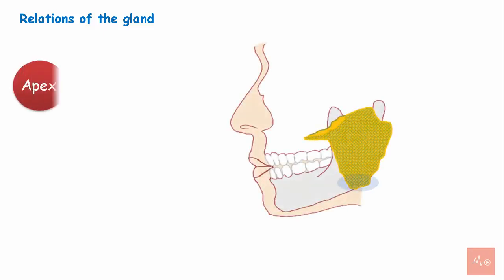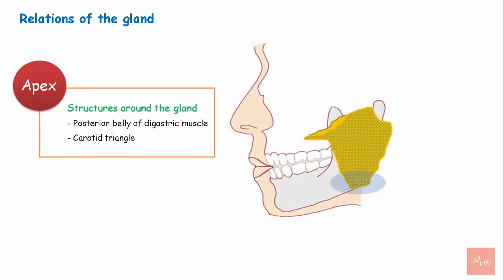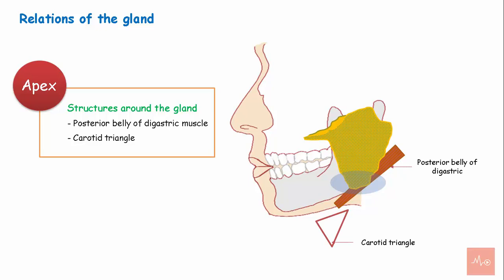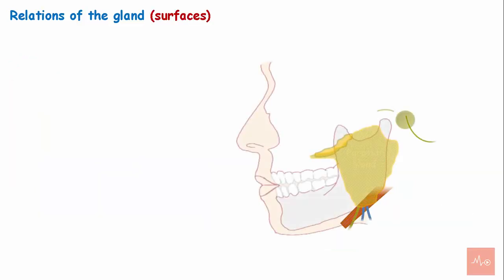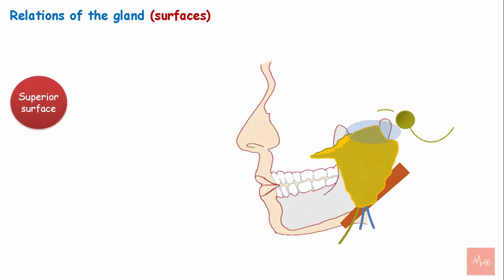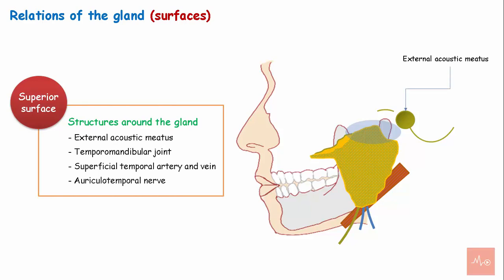The relations of the parotid gland deal with the various structures around and within the gland. The apex of the gland overlaps the posterior belly of the digastric muscle and part of the carotid triangle. Structures emerging through the apex are the retromandibular veins and the cervical branch of the facial nerve. The superior surface is a small, concave surface, and the structures associated with it are the external acoustic meatus, the temporomandibular joint, superficial temporal artery and vein, and the auriculotemporal nerve.